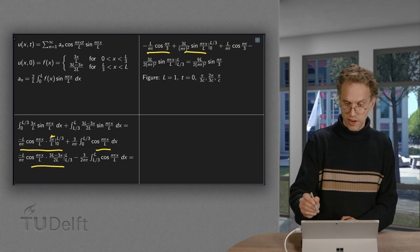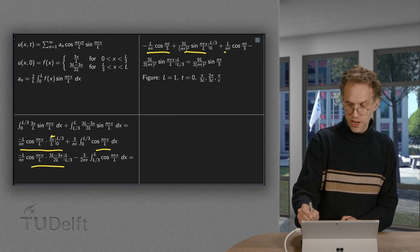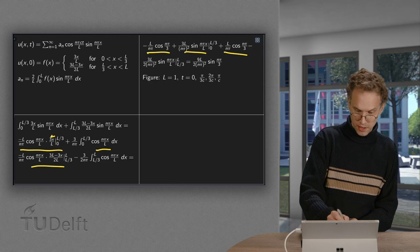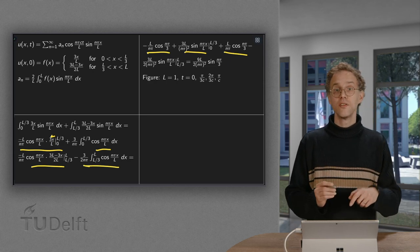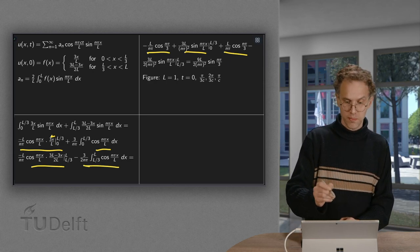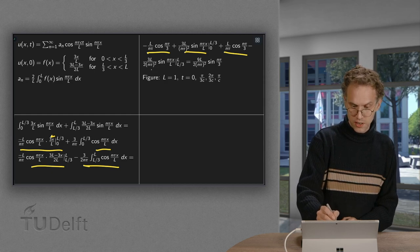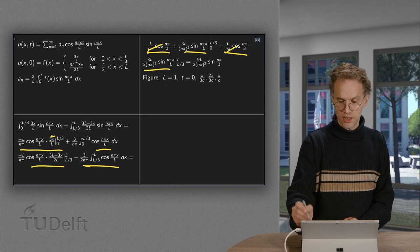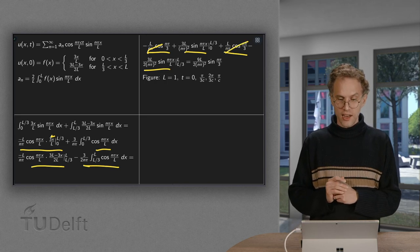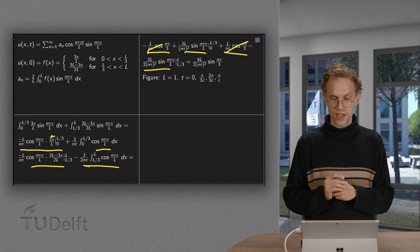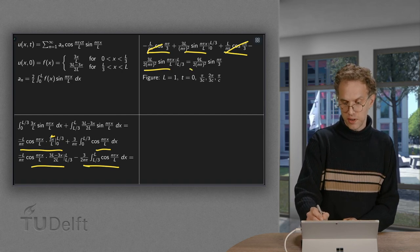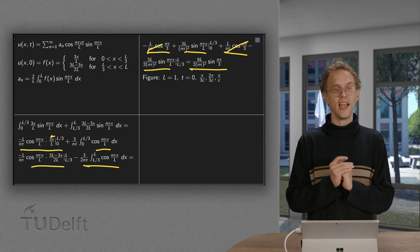So we are left with a plus L over n pi times a cosine and a minus. We have to integrate this part again, which gives us a sine times L over n pi, which gives us this part. And then we see that these two cancel out, which is nice. And the other ones give us only sine of n pi over 3. And if you combine them you get this expression for your an.